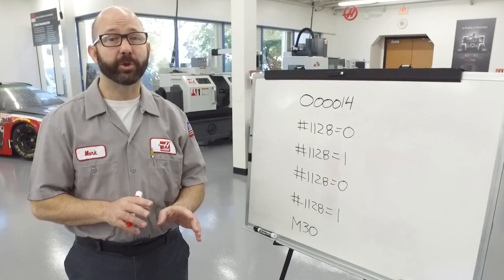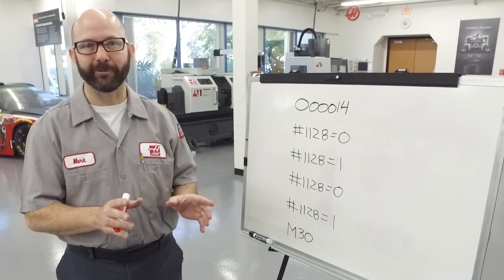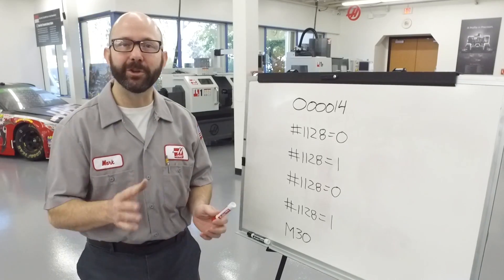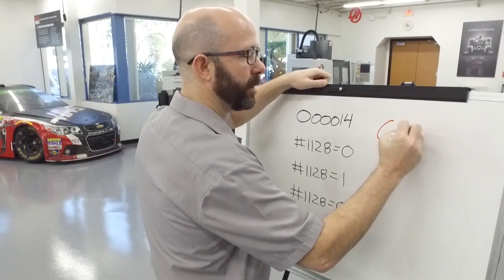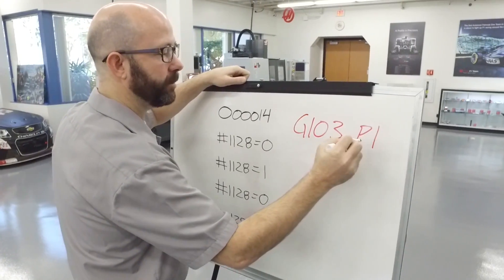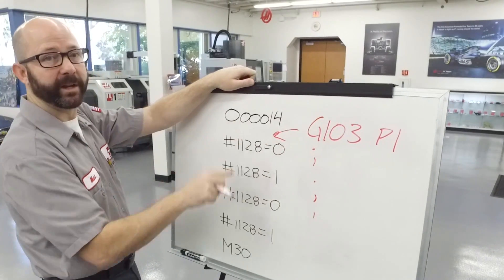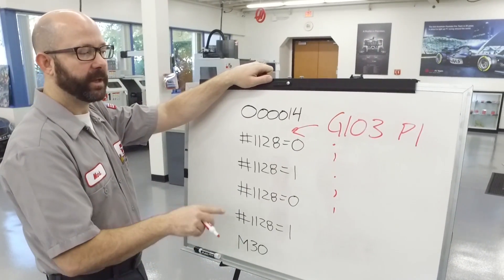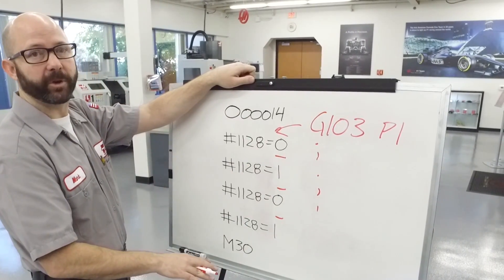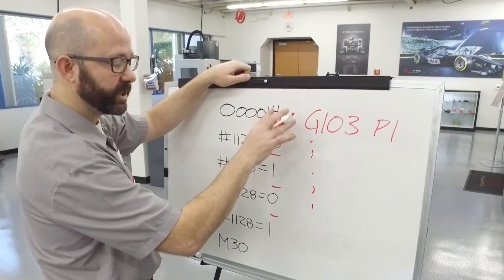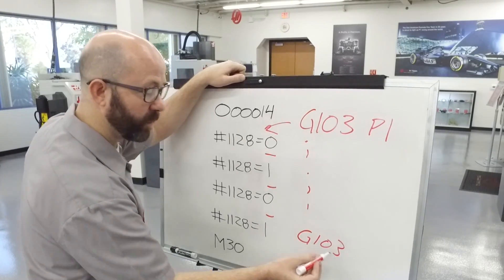Look ahead is incredibly important, but for the macro programmer, sometimes we have to limit that superpower for just a few lines of code. We can do that in a couple different ways. The most common way is to use a G103 P1 in our program followed by a few blank lines, and we'll drop that right in front of our macro statements. What this does is make the control stop and think before going any further in the program. When we're done with our macro statements, we want to turn look ahead back on with a plain G103.